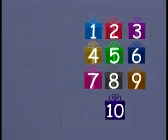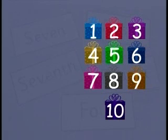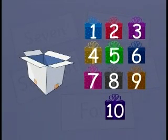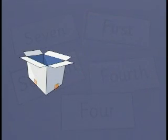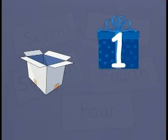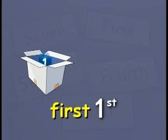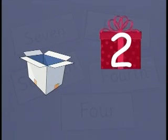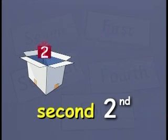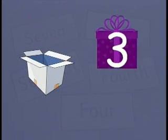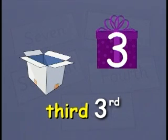Here are ten prizes for a party. They will be given away as prizes for some games. I would like you to help me arrange them in this box. I have numbered them from one to ten. This is prize number one — this is the first prize. This is prize number two, so it's the second prize. Now number three, which is the third prize.